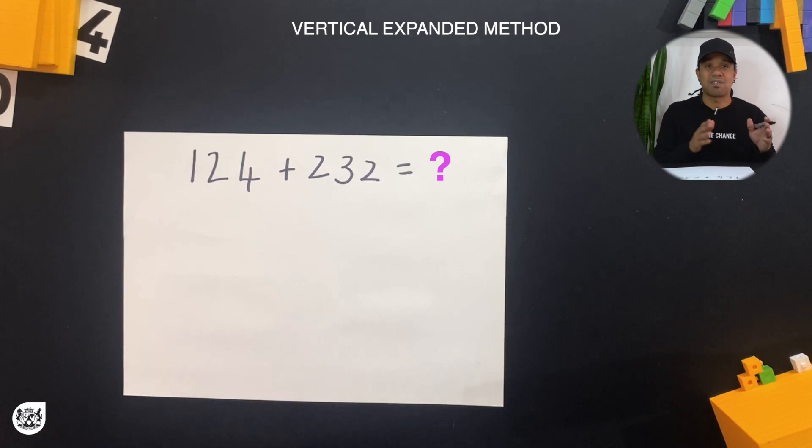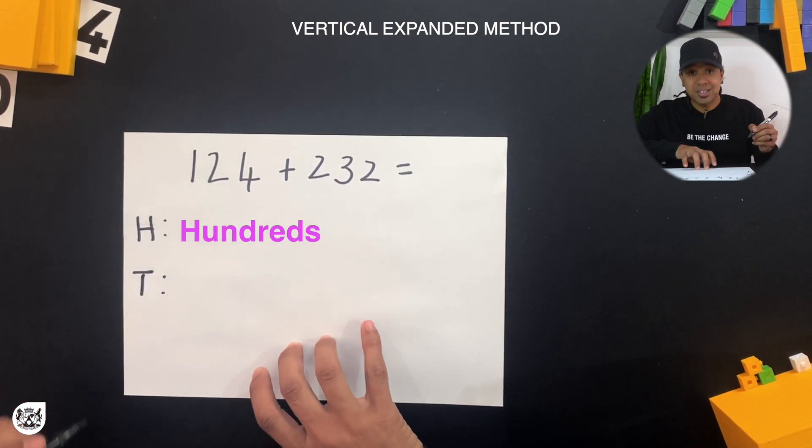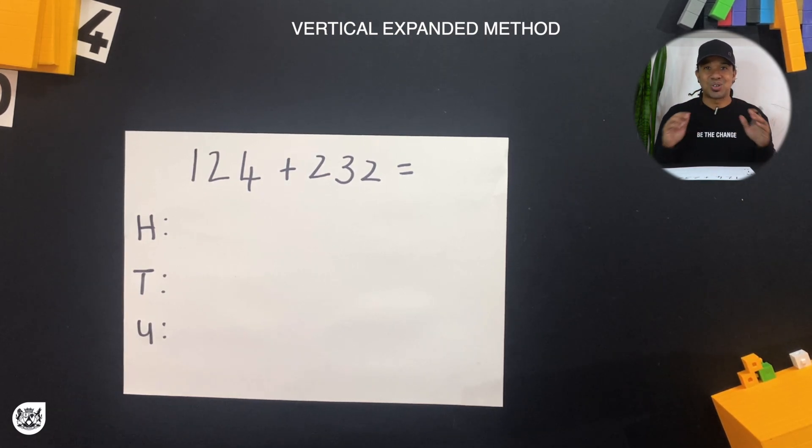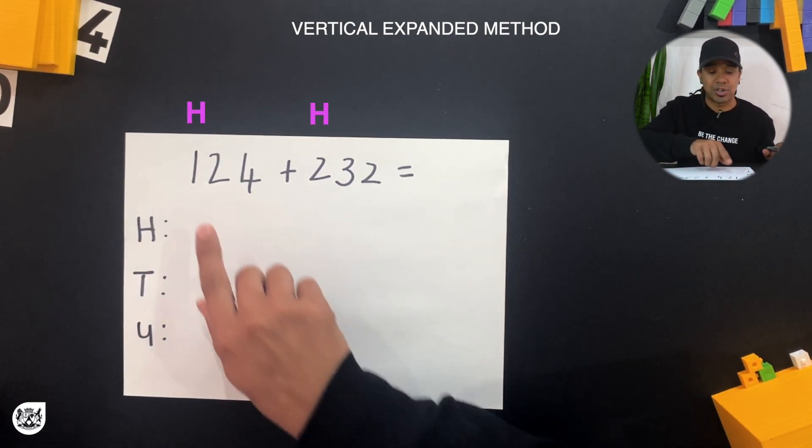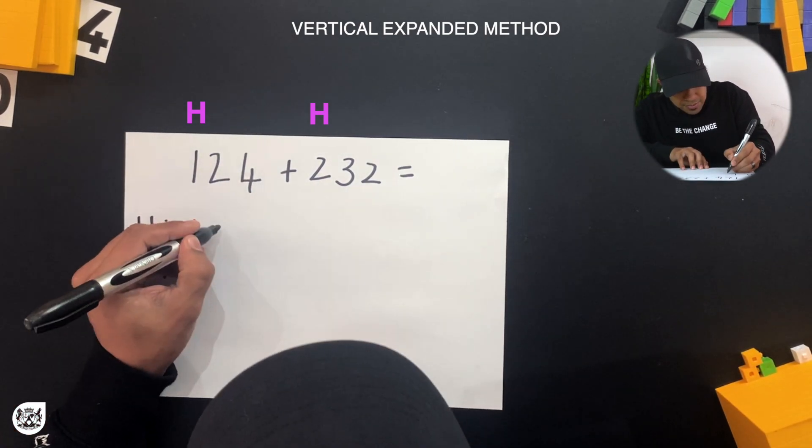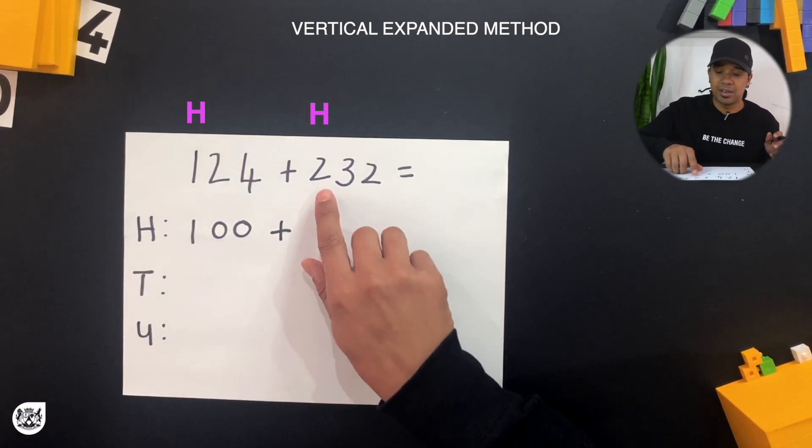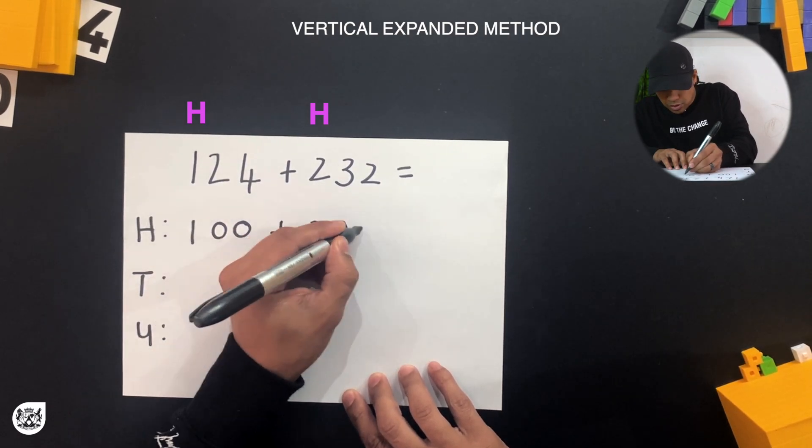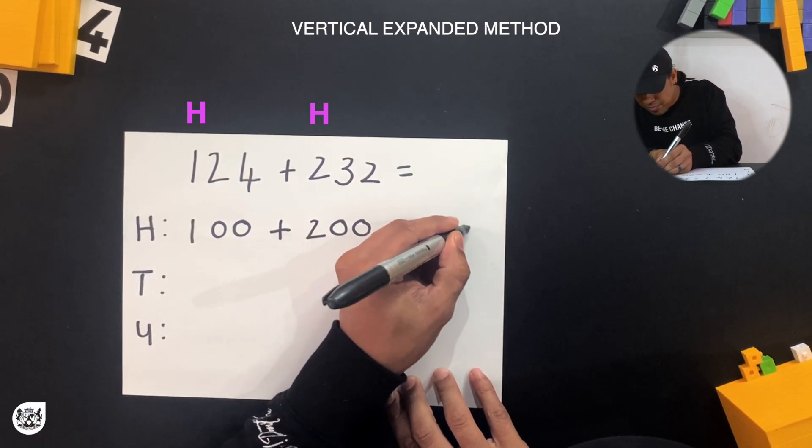So we've got H for hundreds, T for tens, and then U for units which is your ones. Let's look at our first number, 124. We first have to add the hundreds. In 124, the 1 is in the hundreds place and that is 100, so let's write it down. Put down the addition sign. In 232 we've got 2 hundreds in the hundreds place. 100 plus 200 gives us 300, there we go.